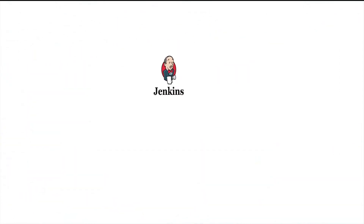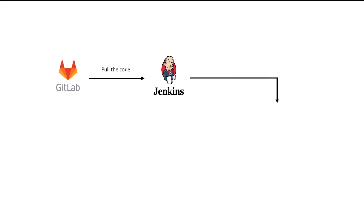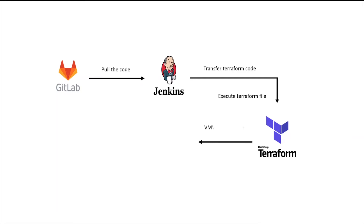Let's explore the workflow of VMware vSphere Instance Provisioning using Terraform, stage by stage. In the first stage, the Jenkins job will pull the VMware vSphere Instance Provisioning Terraform code from GitLab. In the next stage, Jenkins will transfer the Terraform code to the Terraform machine, which has instructions to provision a VMware vSphere Instance from the template.